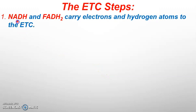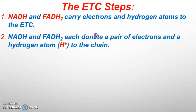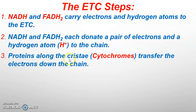Step one: all of the NADH and FADH2s that were made are going to bring the electrons and hydrogen atoms they're carrying — obtained from glucose as we break it down — to the electron transport chain in the cristae. Once they reach the cristae, each NADH and FADH2 will be oxidized, donating both a pair of electrons and hydrogen ions into the chain. All the proteins along the ETC we're going to call cytochromes — a generic term — even though it doesn't accurately describe all of them.